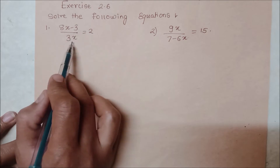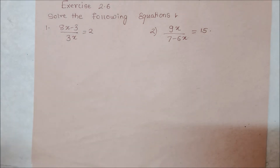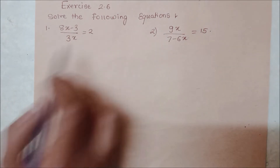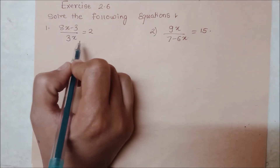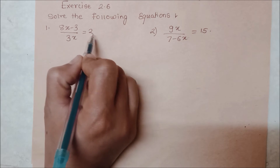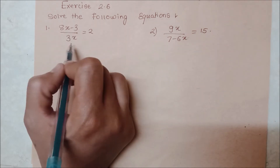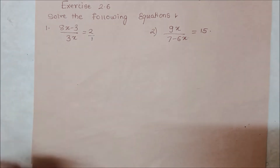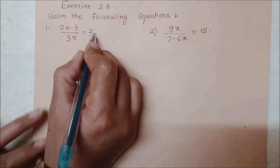Humein diya hai: 8x minus 3 upon 3x is equal to 2. Humein do side mein diya equation — ek taraf equation hai aur ek taraf ek value di hui hai. Toh humein kya karna hai? Is value se hum idhar ke equation ko cross multiply kar lenge. Iske neeche kuch nahin hai, matlab suppose hum maan lenge 1 hai. Right, and then cross multiply karenge.